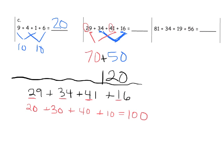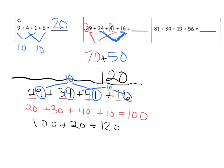And then we can add our 1s. And we can see that 9 plus 1 is 10. And we can see that 4 plus 6 is 10. So that's another 20. So now we have 100 plus 20 equals 120. So we have a couple of different ways to show that our answer is 120.